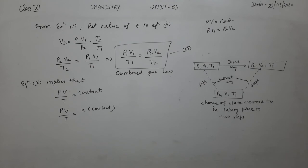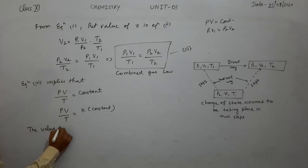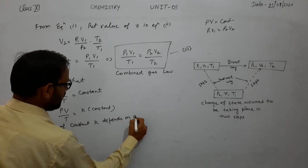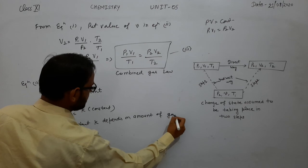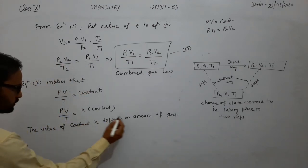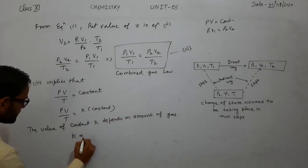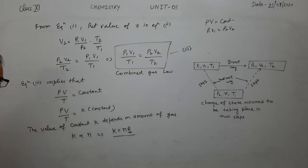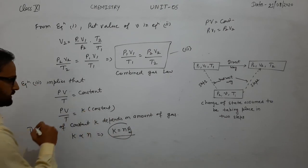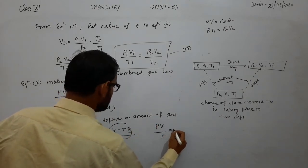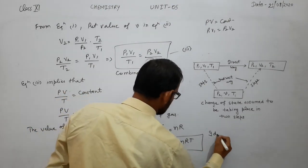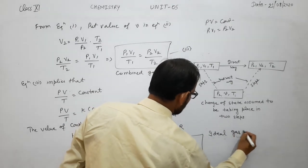The value of this constant PV/T depends on the amount of gas, which is represented by the number of moles N. So PV/T is proportional to N, introducing the universal gas constant R: K = NR. Substituting: PV ÷ T = NR, which gives us PV = NRT — another important form of the ideal gas equation.